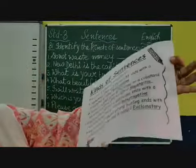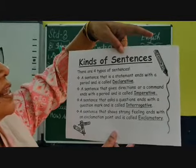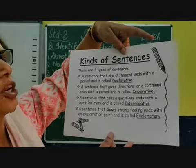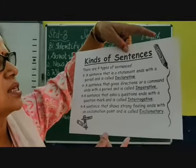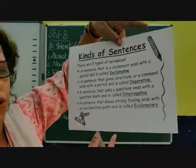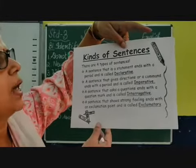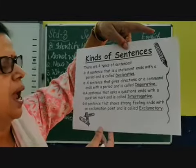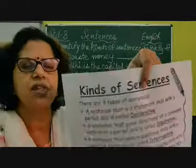As you can see, there are four types of sentences. Declarative or assertive sentences end with a full stop. Imperative sentences give a direction, command, or request. Interrogative sentences ask a question and end with a question mark. Exclamatory sentences show some strong feeling and end with an exclamation mark.